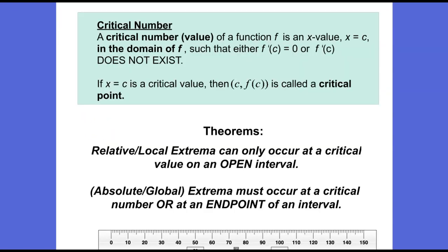A critical number or critical value of a function f is an x value x equals c in the domain of f such that either f prime of c equals 0 — the slope of the tangent line is horizontal — or f prime of c does not exist or is undefined — the slope of the tangent line is vertical. If x equals c is a critical value, then the point (c, f(c)) is called a critical point. Relative or local extrema can occur only at a critical value on an open interval. Absolute or global extrema must occur at a critical number or at an endpoint of an interval.